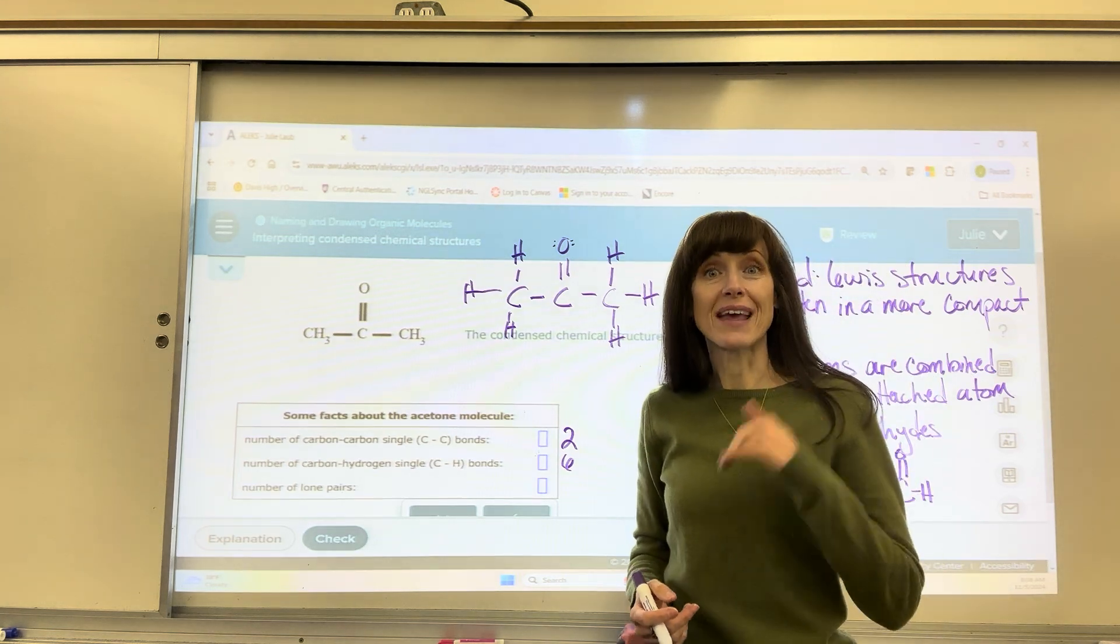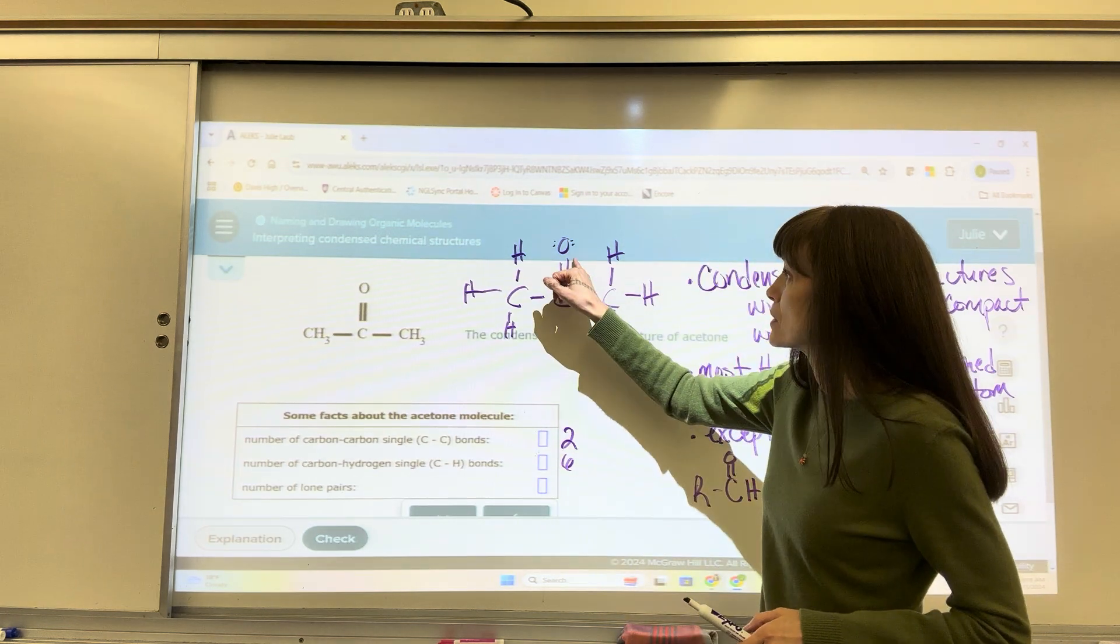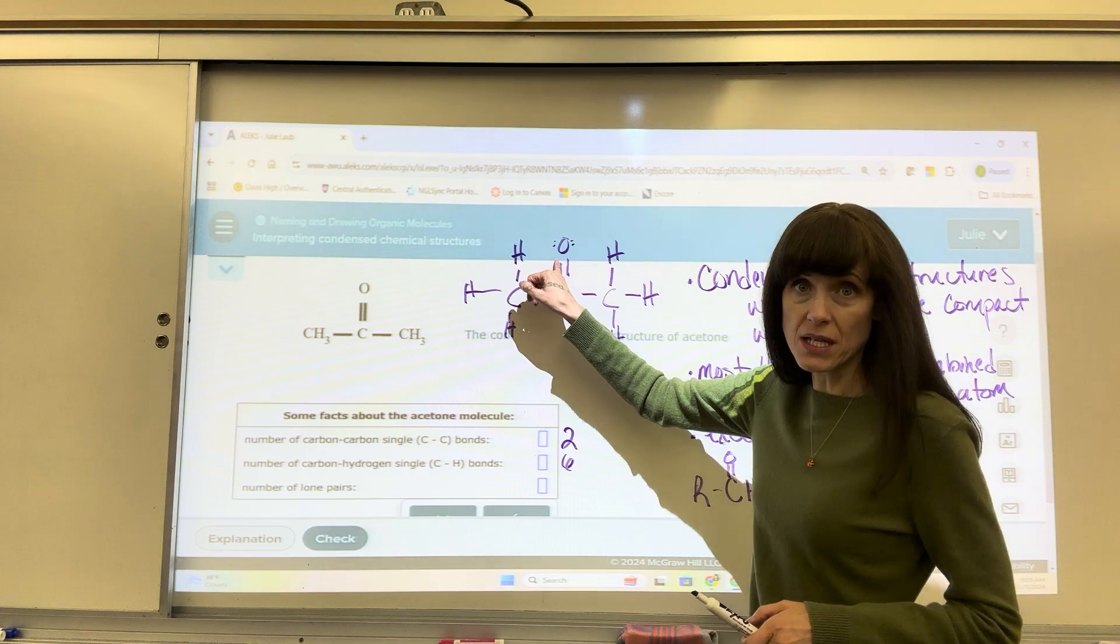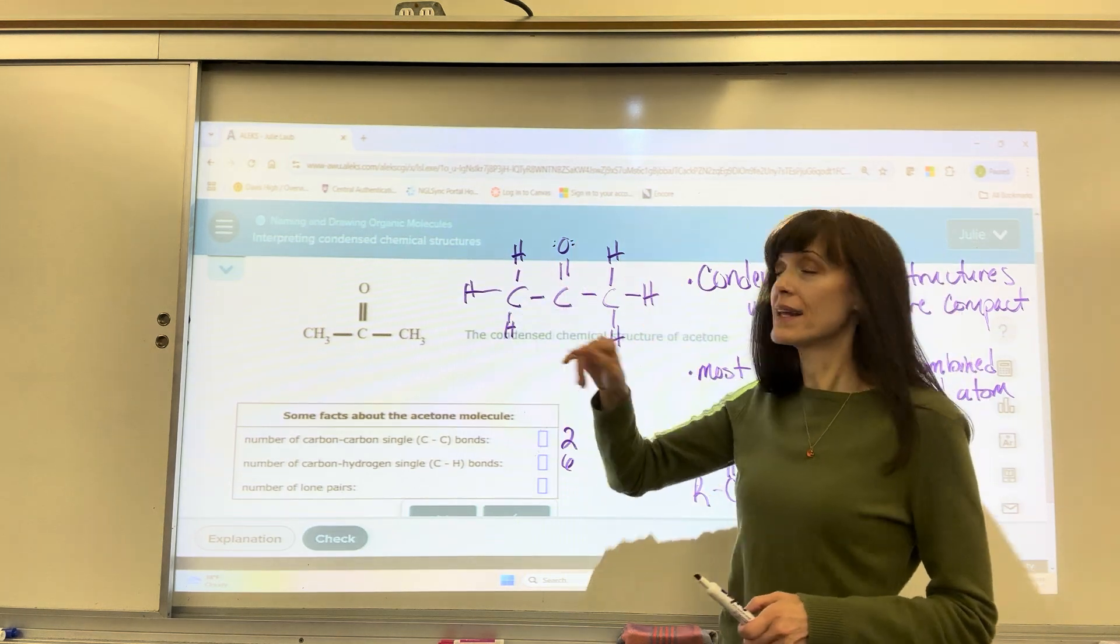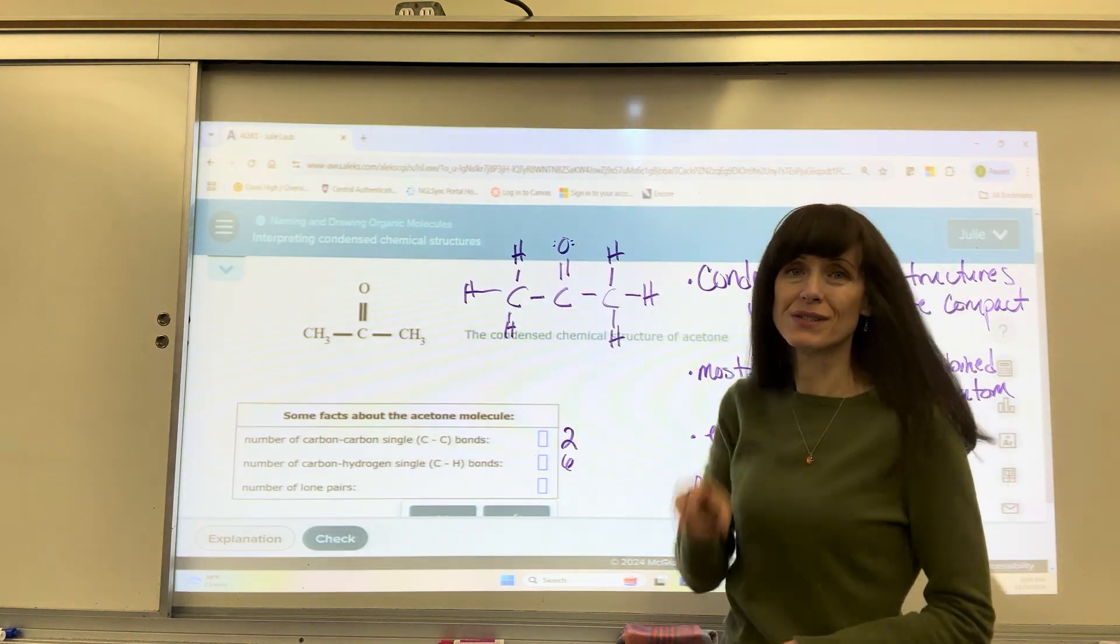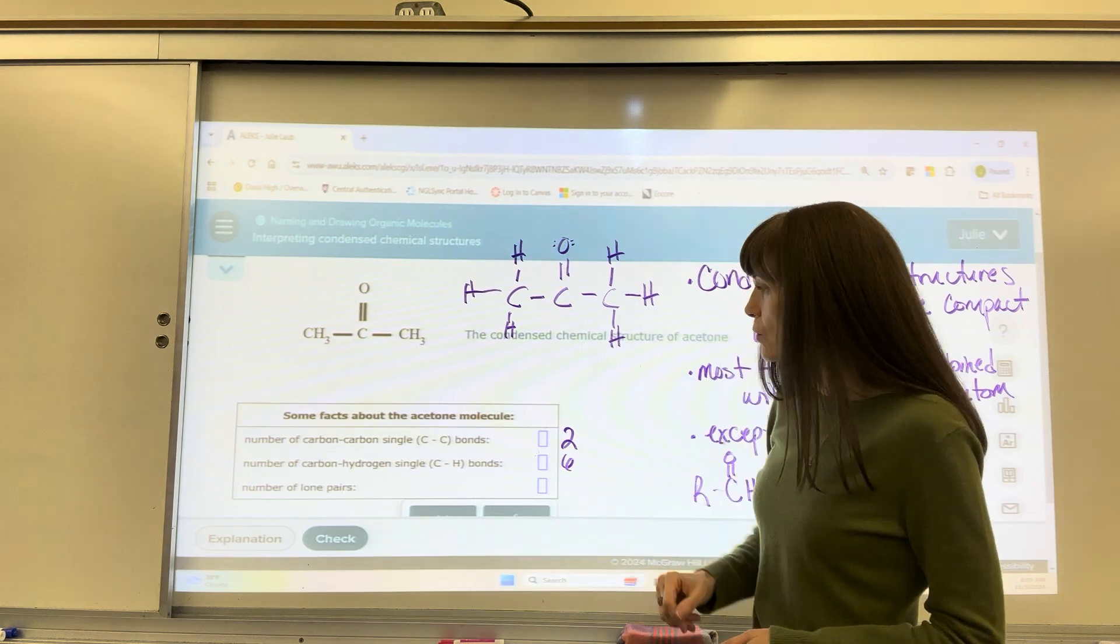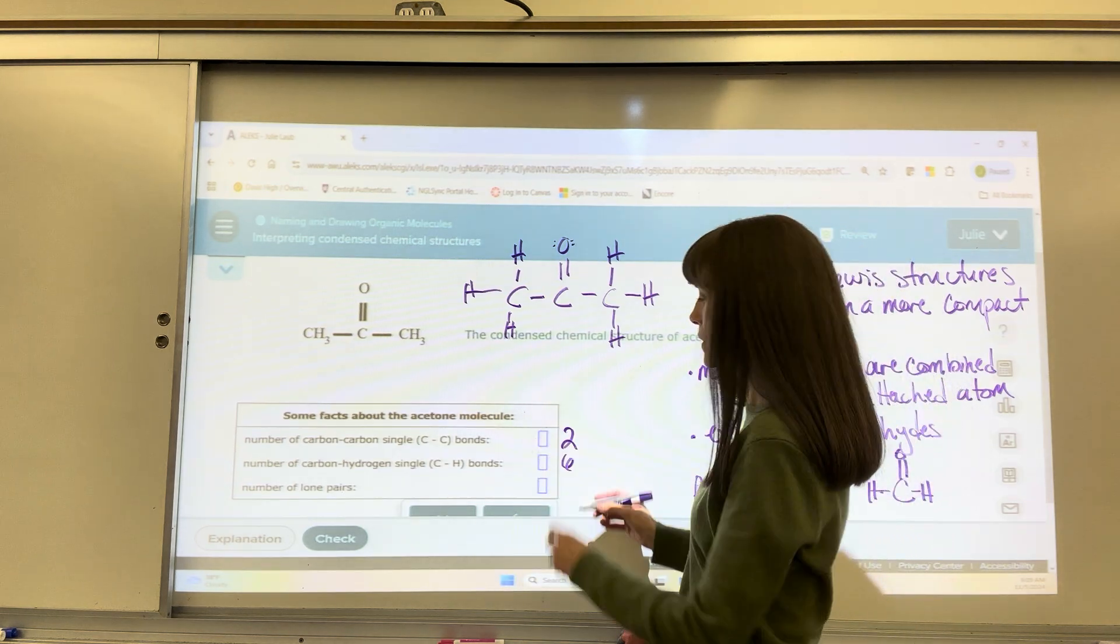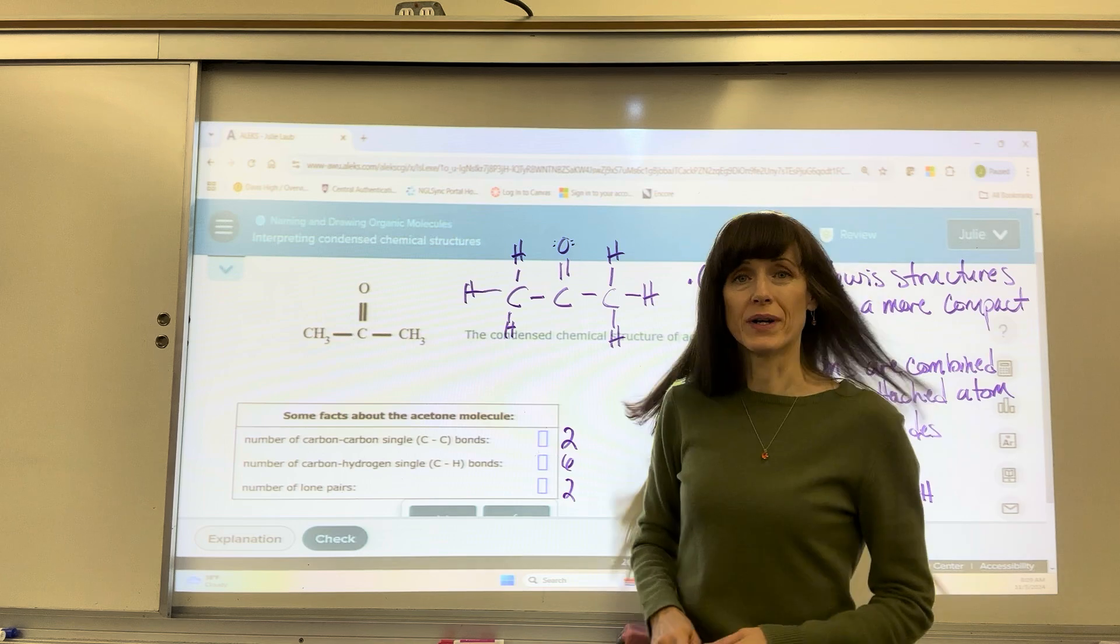Remember, oxygen has six valence electrons. It's going to share two of its valence electrons right here, which leaves four electrons: one, two, three, four, which is two lone pairs. The last question right here wants us to give the number of lone pairs, so I put a two right there.